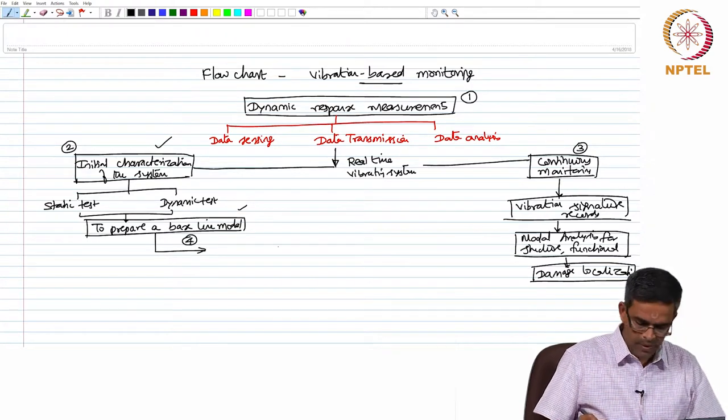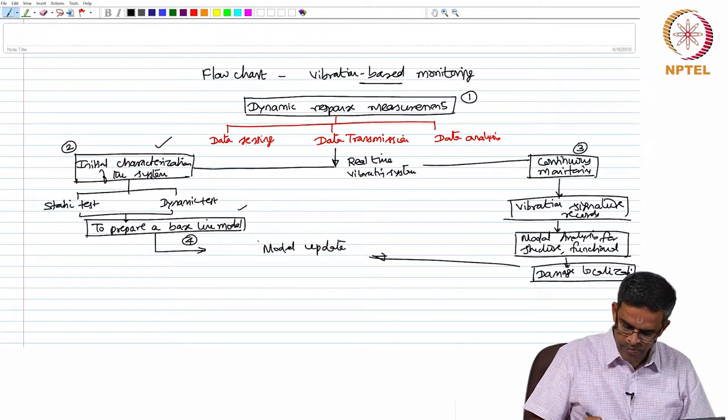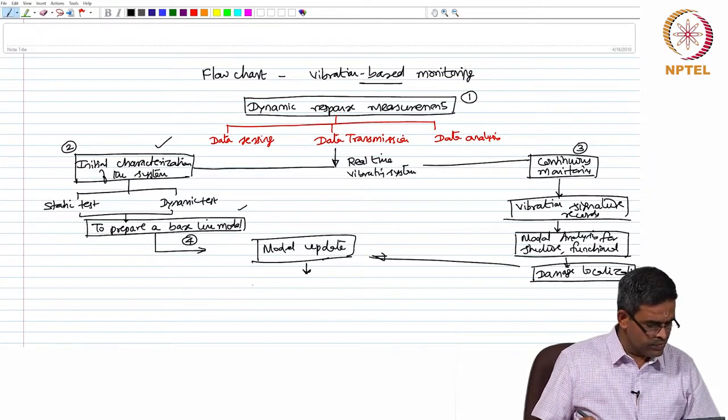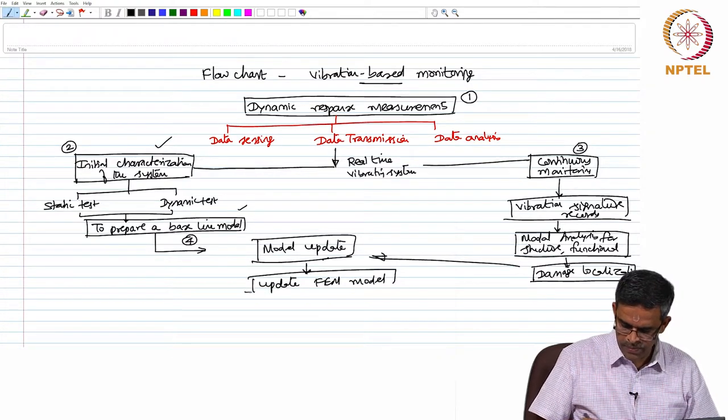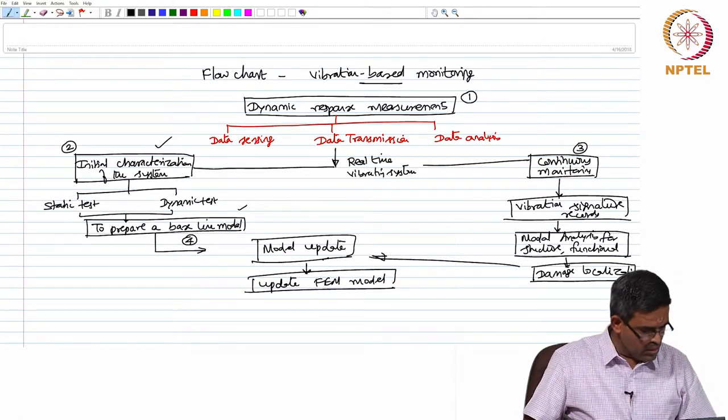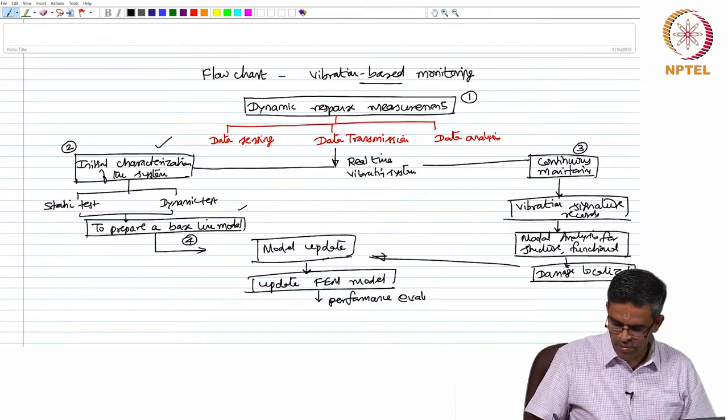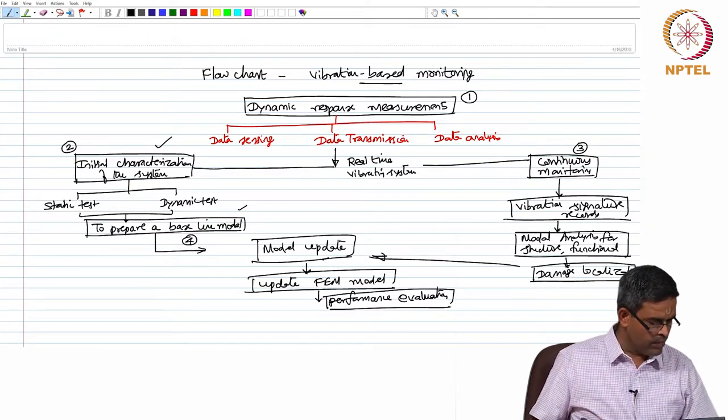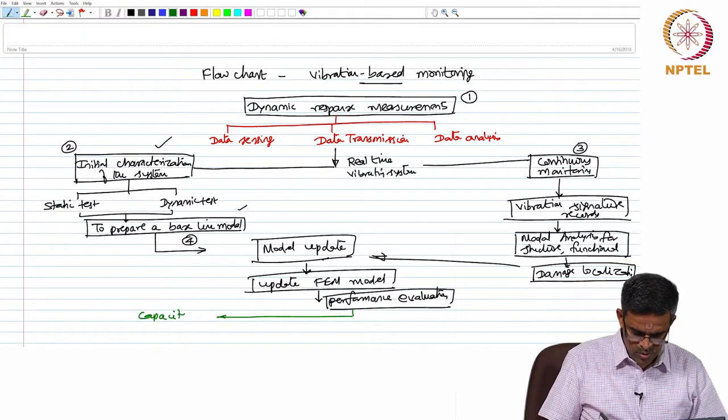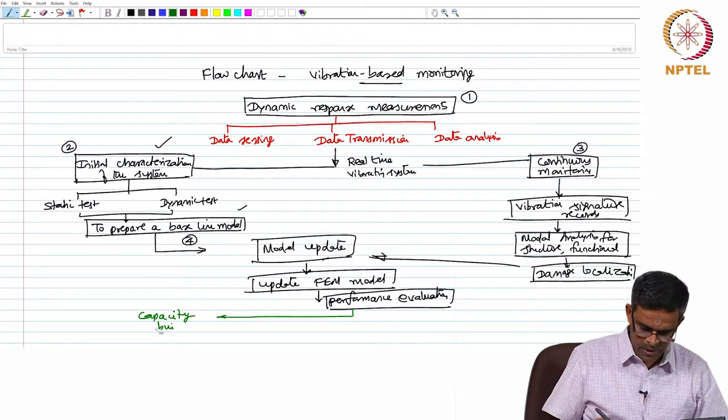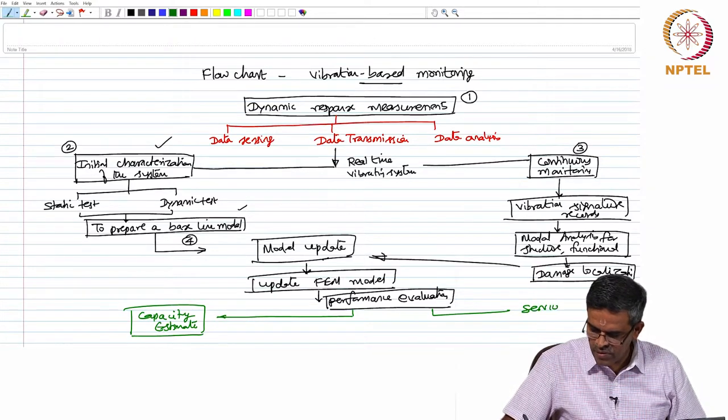Both these data put together, we will update the model. Based on the updated model, we will further update the finite element model for analysis, and based on which the performance evaluation of the system is done. The performance evaluation will finally lead towards two issues: the capacity building or capacity estimate of the structural system and service life prediction of the system.